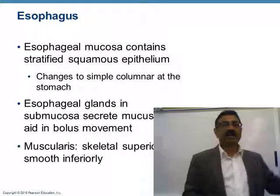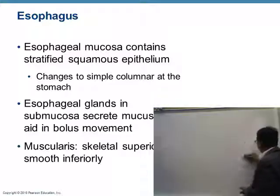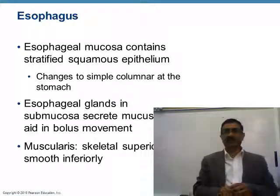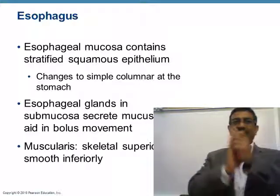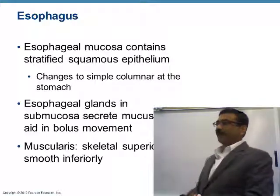The innermost layer of the esophagus is mucosa. We know that the GI tract has four layers: mucosa, submucosa, muscularis externa, and outermost is serosa. The mucosa contains stratified squamous epithelium. The esophagus is a narrow tube and food passes through it, so friction occurs — stratified squamous epithelium provides protection.